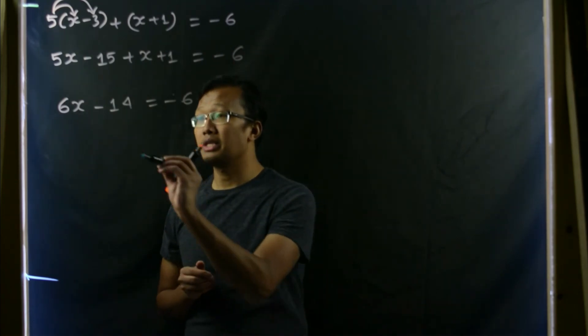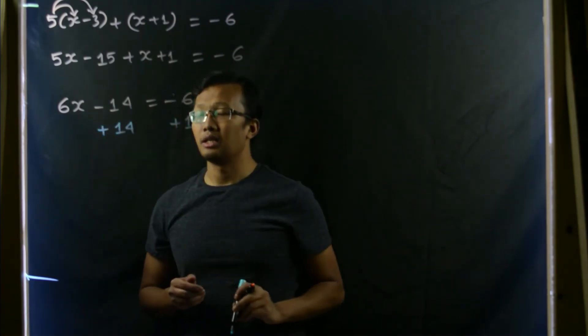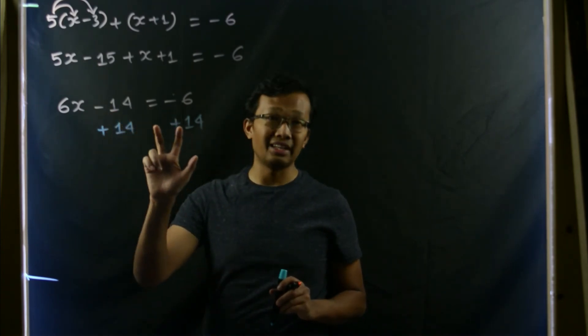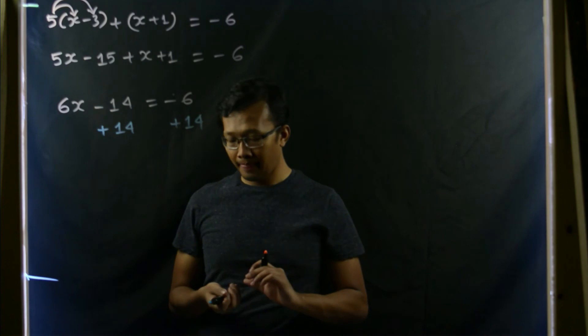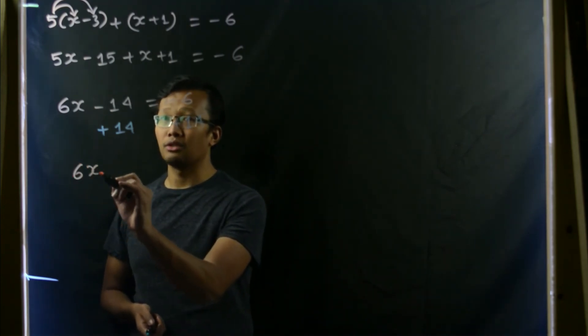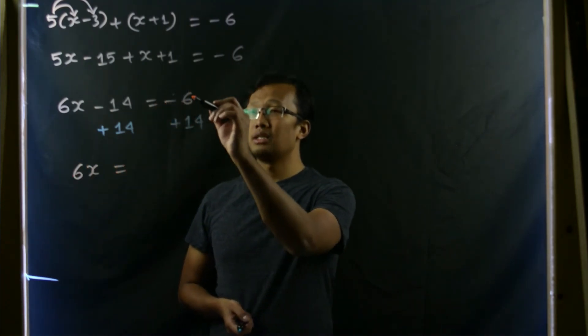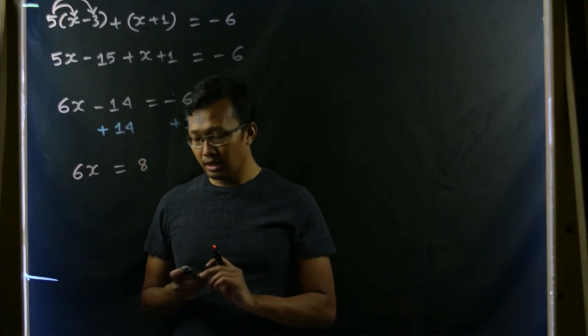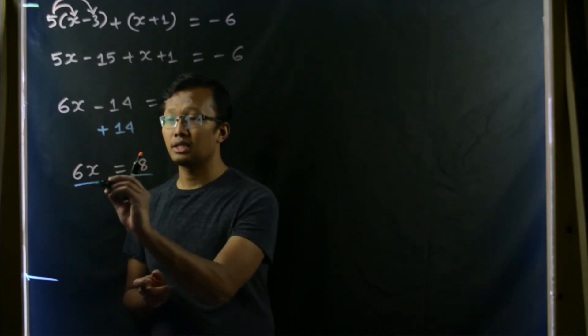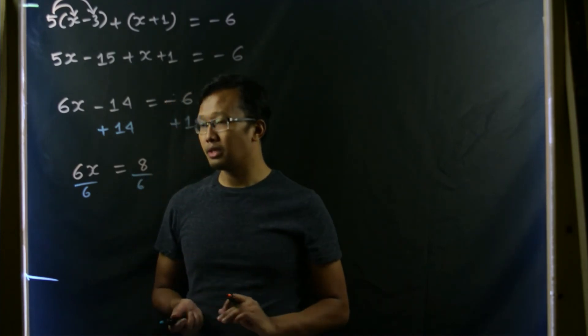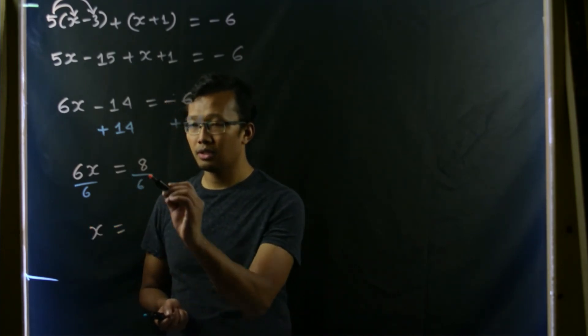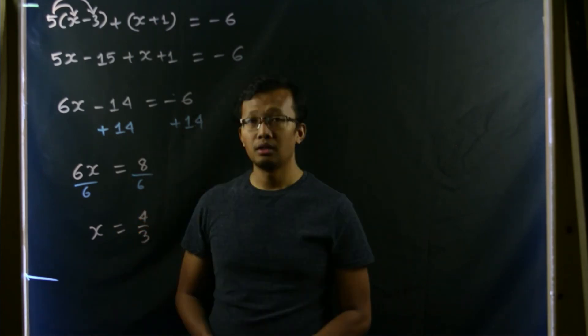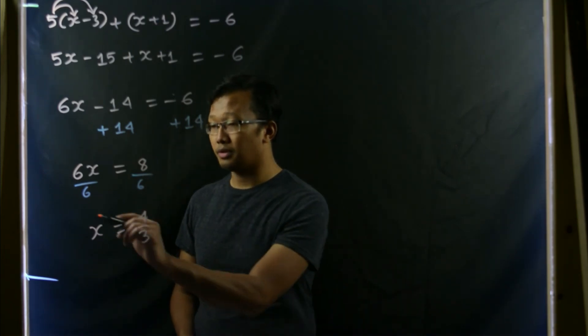Let us use the addition property, and let us add 14 on both sides, so that we get rid of -14 in the left hand side. So that would give us 6x equals 14 minus 6 is 8. And then let us divide both sides by 6. So that will give us x equals to 8/6 is simply 4/3. So that's the solution, x equals to 4/3.